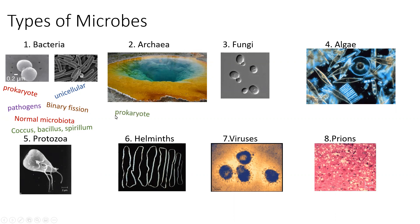Next up are the archaea. These are prokaryotes and therefore unicellular, but these organisms live in extreme environments — environments that are not compatible with our bodies. They may be really, really hot, or really, really salty, or have crazy high osmotic pressure. Because the organisms that live in these conditions are not compatible with our bodies, they cannot infect us and cannot make us sick. Therefore, the archaea are not considered to be human pathogens.